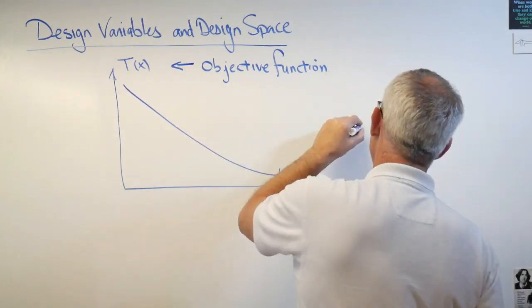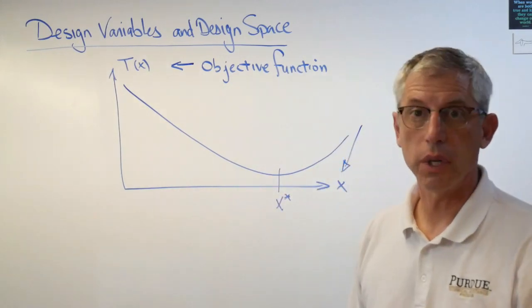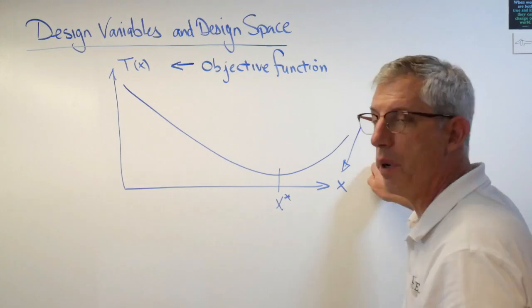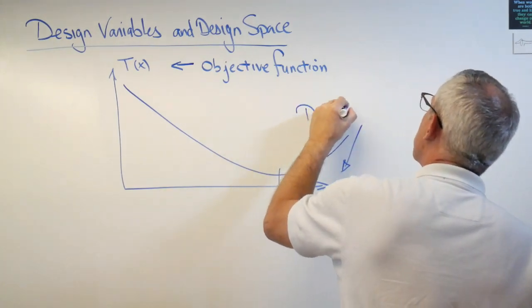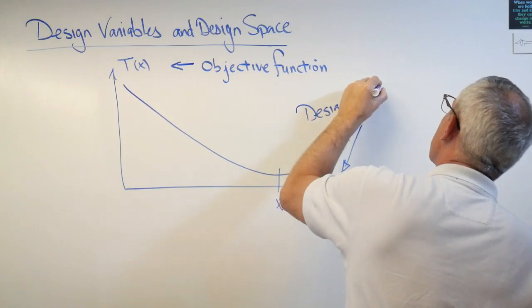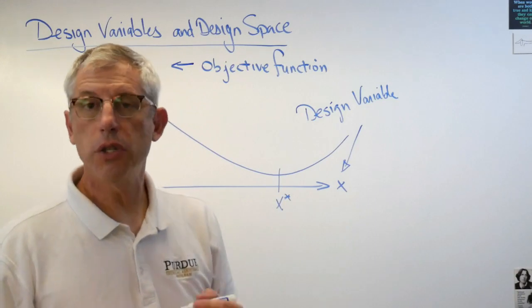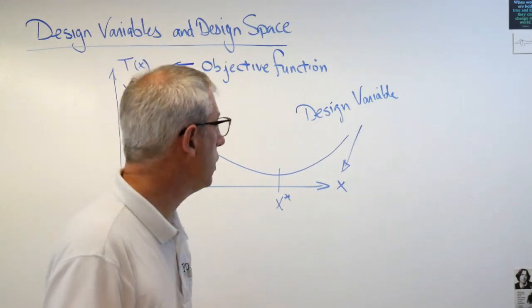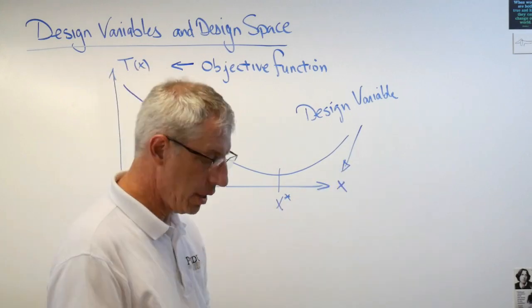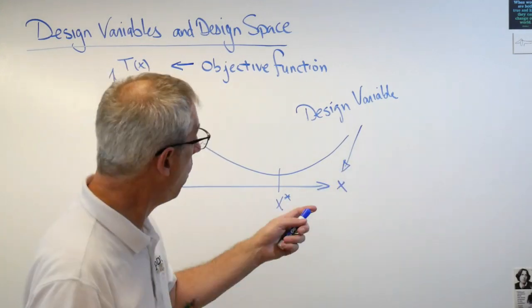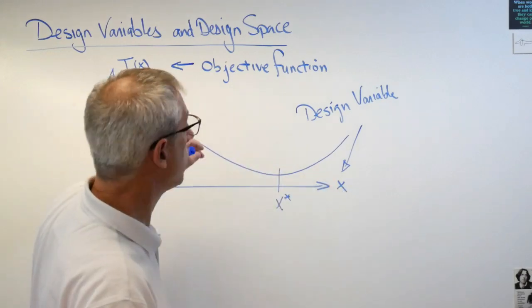The thing you get to change, this independent variable, has a more specific name that more relates to what we're doing. And this is called a design variable. By changing that the implication is you're changing your design. And you could be changing the design of a process or a product. That's called a design variable. This is a one design variable problem. There's only one design variable and there's one objective function.